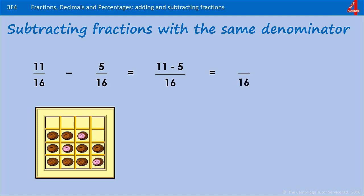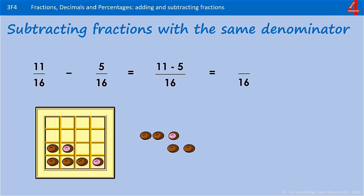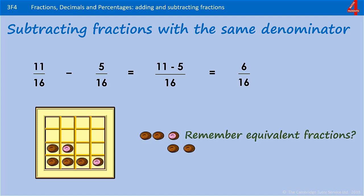Here we have a chocolate box that holds 16 chocolates. Currently there are 11 chocolates in there, so that's 11 sixteenths. Take 5 of those chocolates away — how many chocolates are remaining? That tells you how many sixteenths you have left, and you have 6 sixteenths. If you know how to work out equivalent fractions, have a go at simplifying this, and you will find that your answer is the same as 3 eighths.